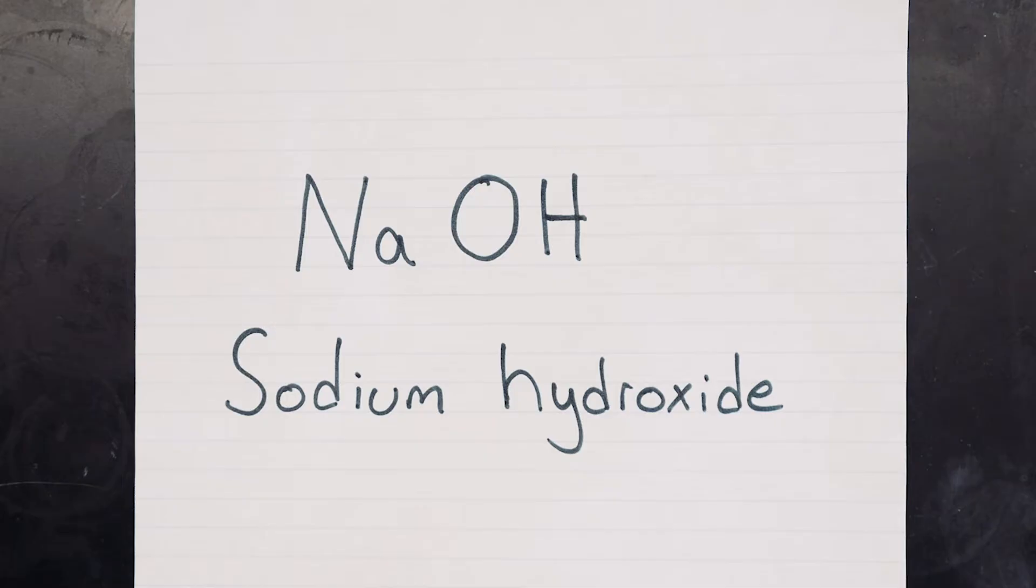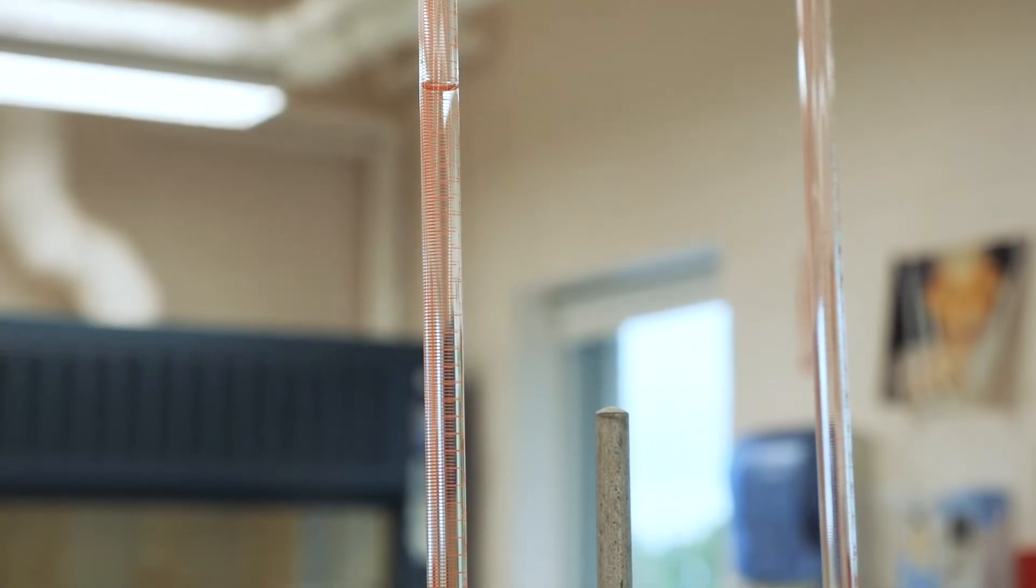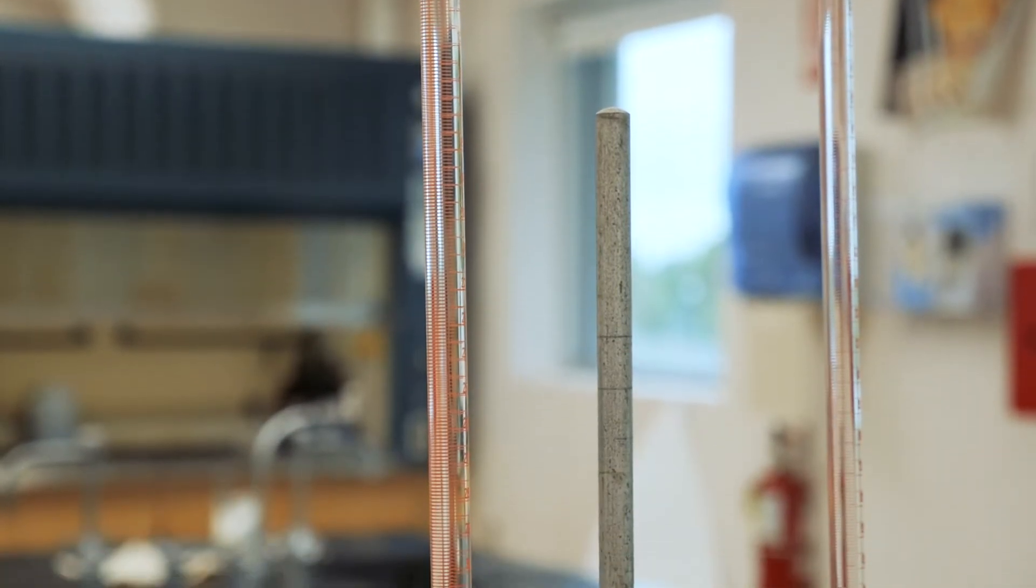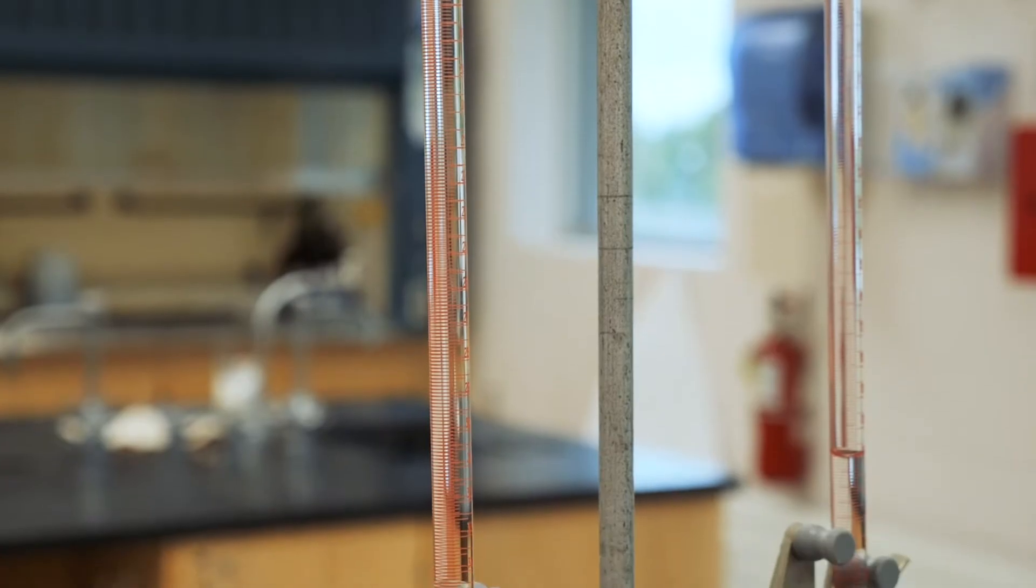Typically we make a solution of sodium hydroxide that's close to what we want, then measure its concentration very accurately against a standard doing what's known as a titration.